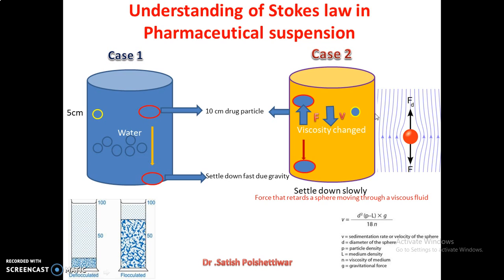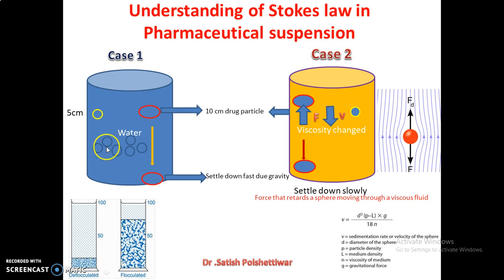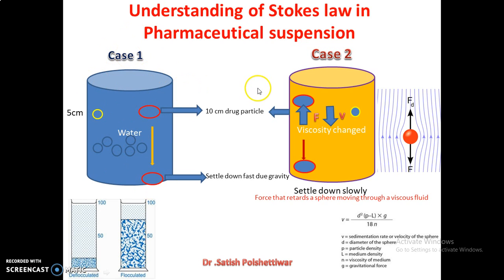Now consider case one: you have two particles, one with a particle size of five centimeters and another of ten centimeters. The five-centimeter is the smaller particle and the ten-centimeter is the bigger particle. If you transfer these particles into a liquid — mostly water — what will happen? Because of particle density, they will fall down due to gravity and settle very fast. This is the mg force we discussed in earlier slides. This is what happens in the first case.